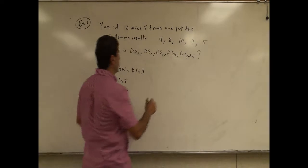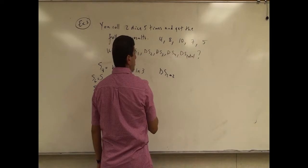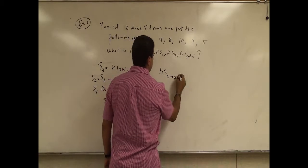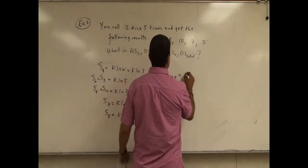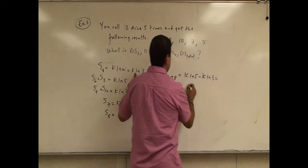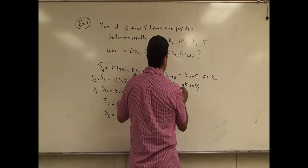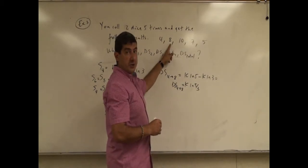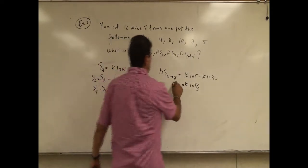So then delta S from the first roll to the second roll — we can call it delta S4 to 8. That is the entropy of macrostate 8 minus entropy of macrostate 4: kln(5) minus kln(3), so it's kln(5/3). From here to here, the entropy of the universe increased because the uncertainty increased.